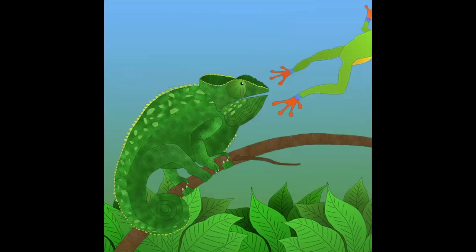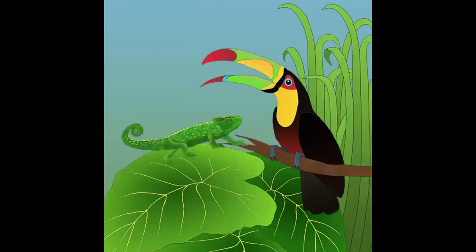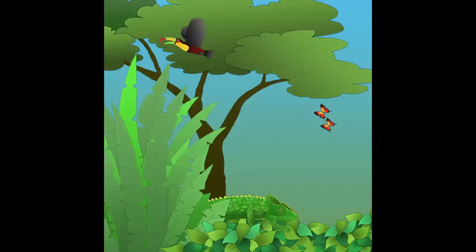Chameleon walked through the rainforest until he met Toucan. Hello, he said. Your beak is really beautiful. I know that I'm very special and very colourful, said Toucan. But I can't change colour like you. Show me how you do it. I'm sorry, said Chameleon. But I don't know how to do it. Oh dear, that's a pity, said Toucan as he flew away.